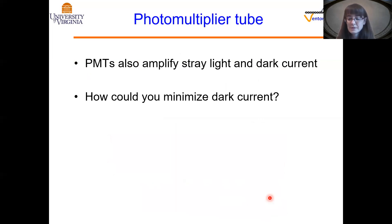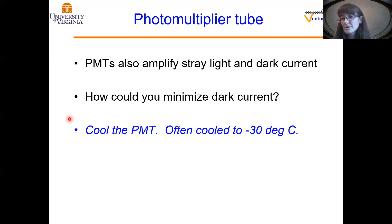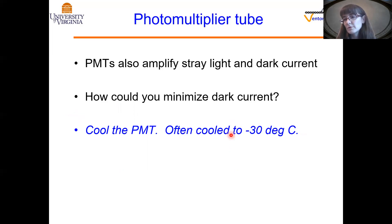PMTs are great at signal amplification, but unfortunately they also amplify stray light and dark current, which can overwhelm the system. Since dark current is often a response to thermal radiation, a common solution is to physically cool the PMT — this is called a cooled PMT, and it is cooled either by chilled water or an onboard refrigeration system, often down to below freezing temperatures.